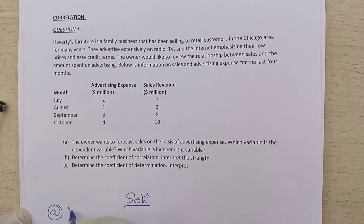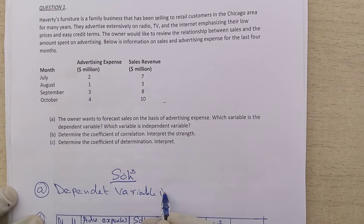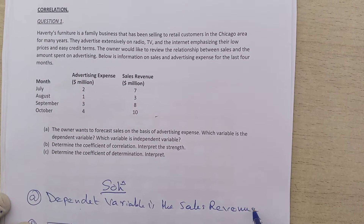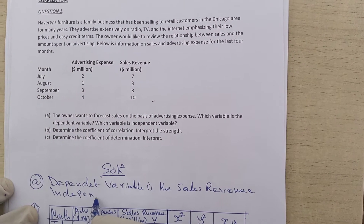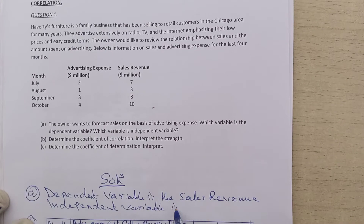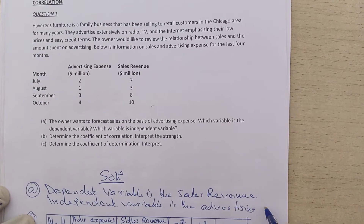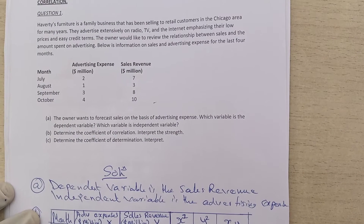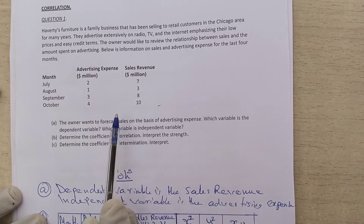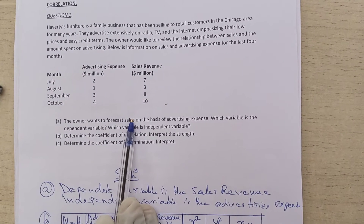So, the dependent variable is the sales revenue, and the independent variable is the advertising expense. The advertising expense is influencing the sales — the more you advertise, the more you sell. So the one influencing the other is independent, whereas the one that has been influenced is the dependent variable.